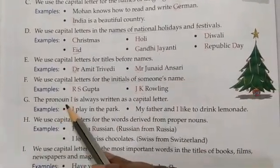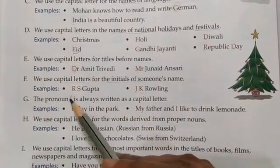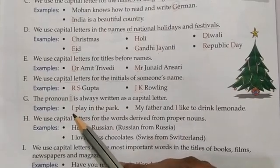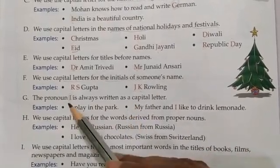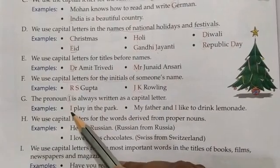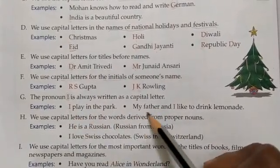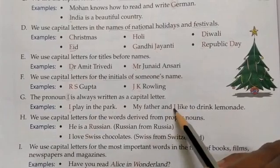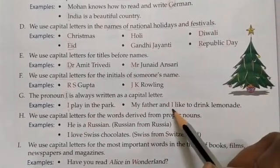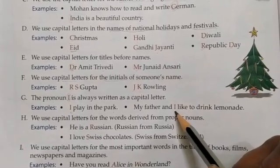The pronoun I is always written as a capital letter. Whether the pronoun I is used at the beginning or in the middle of any sentence, I is always capital. For example, 'I play in the park' — I is capital. 'My father and I like to drink lemonade' — I is used in the middle of a sentence and it is still capital.